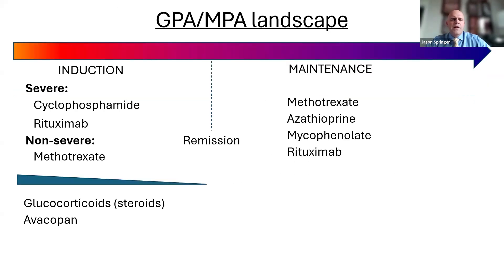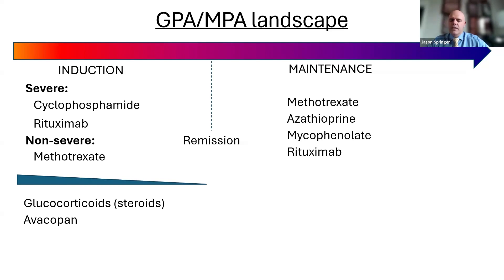When the disease is first active or relapsing, we first need to decide if it's severe or non-severe. Severe basically means any life- or organ-threatening manifestations, and we want to be more aggressive in those situations. Medications like cyclophosphamide and rituximab have been shown to be effective there. In non-severe disease, we sometimes use methotrexate. These agents are always combined with something else — either glucocorticoids or now Avacopan, which can help reduce or eliminate steroids. After remission, several maintenance agents have been shown to be effective: methotrexate, azathioprine, mycophenolate, and rituximab.